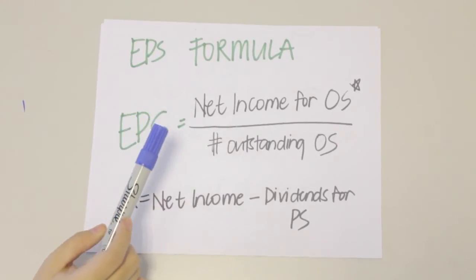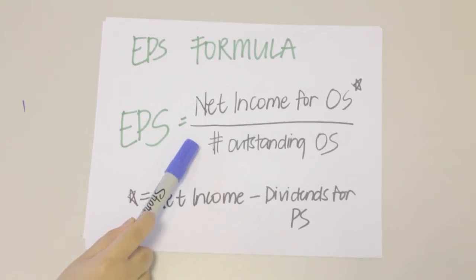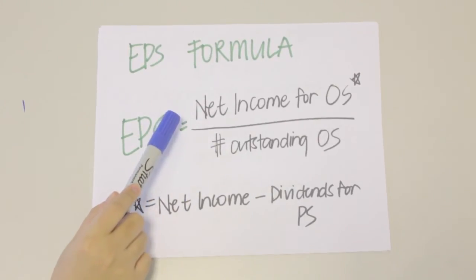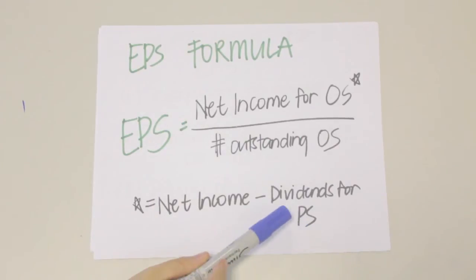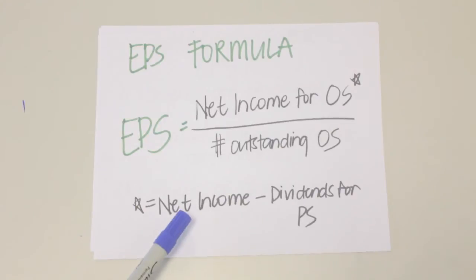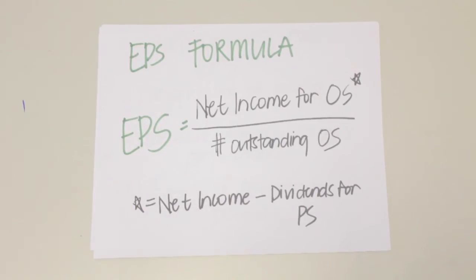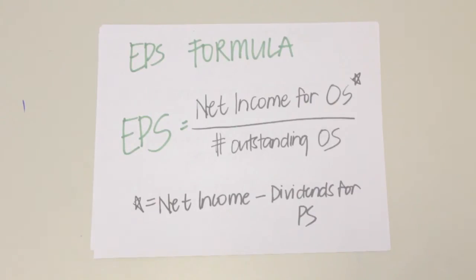The formula for earnings per share is simply the net income attributable to ordinary shareholders divided by the total number of outstanding ordinary shares. To get the net income attributable to ordinary shareholders, we simply deduct the dividends for preference shareholders from the total net income. If preference share is cumulative, the preference dividend for the current year is deducted from total net income whether declared or not. If preference share is non-cumulative, the preference dividend is only deducted when there is a declaration. In either case, dividends in arrears are no longer considered.